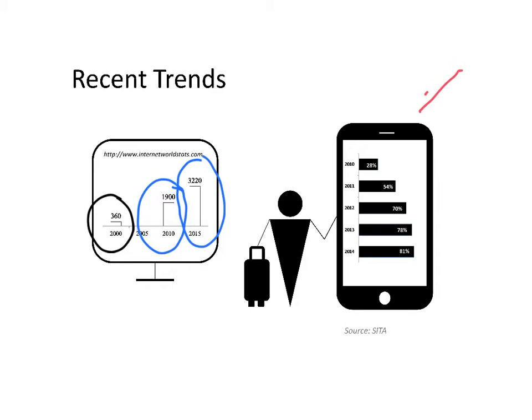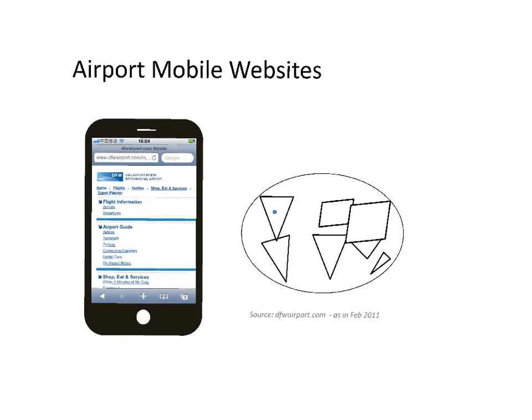A most recent trend is the access to mobile internet through mobile devices. If we look at passengers traveling with a mobile device with access to the internet, it was 54% of them in 2011, but this was more than 80% in 2014. So airports, in order to serve those passengers, start to provide mobile services. This is one example of Dallas in the US, as it looked in 2011.